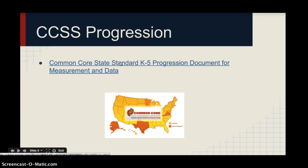A document describes the progression from kindergarten to fifth grade and how the standards change year to year. Interestingly, the last measurement standard as described by Common Core is actually in fifth grade. After fifth grade, students are really not getting any more instruction on measurement — only application problems. The elementary years are extremely crucial because once middle school hits, there is no more dedicated measurement instruction, which should be even more incentive to improve how we teach it.